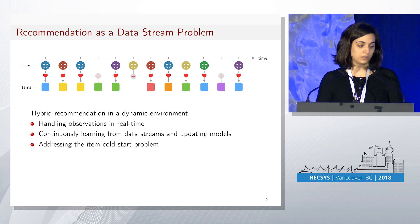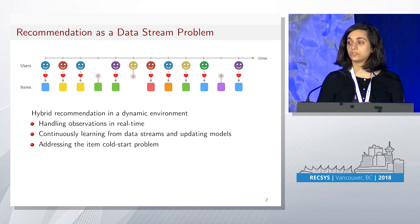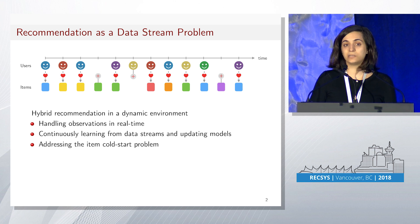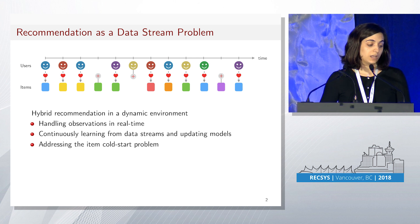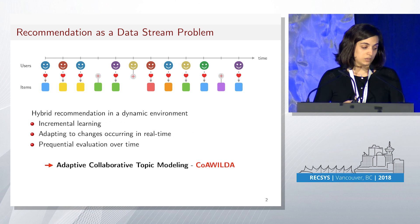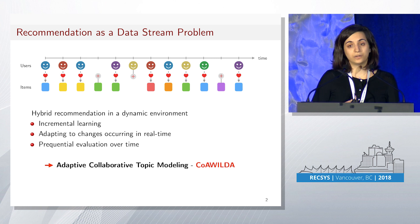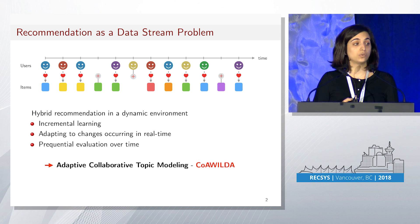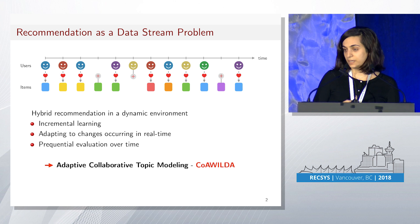This is a common setting in, for example, news recommendation, tweet recommendation, or other examples. The idea is that we need to handle observations in real time and continuously learn from the data streams and the observations we're receiving. We're considering a hybrid recommendation approach in order to address the item cold start problem. We rely on incremental learning in order to update the model in real time. The main problem when handling data streams is to adapt to concept drifts that may occur in the data — user preferences may change, and item perceptions also may change.